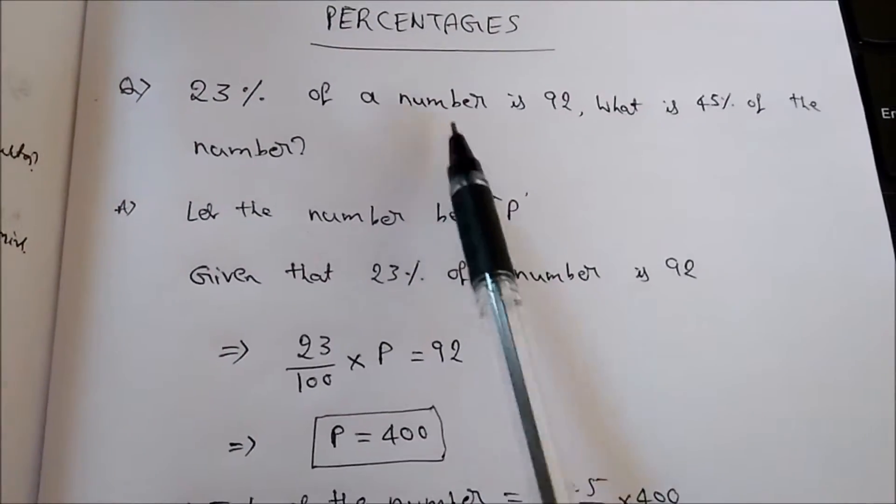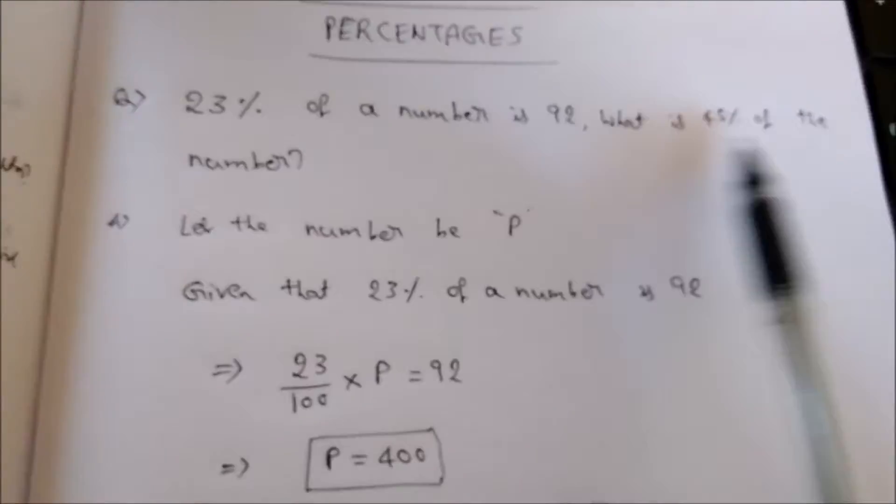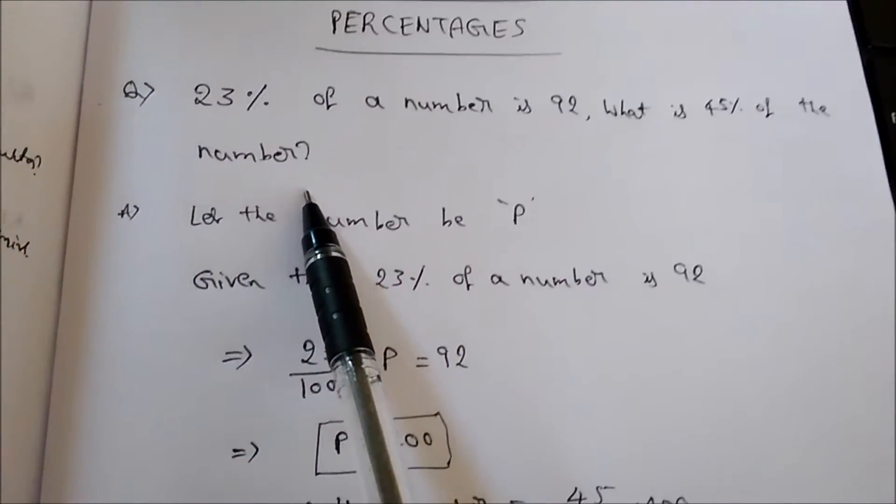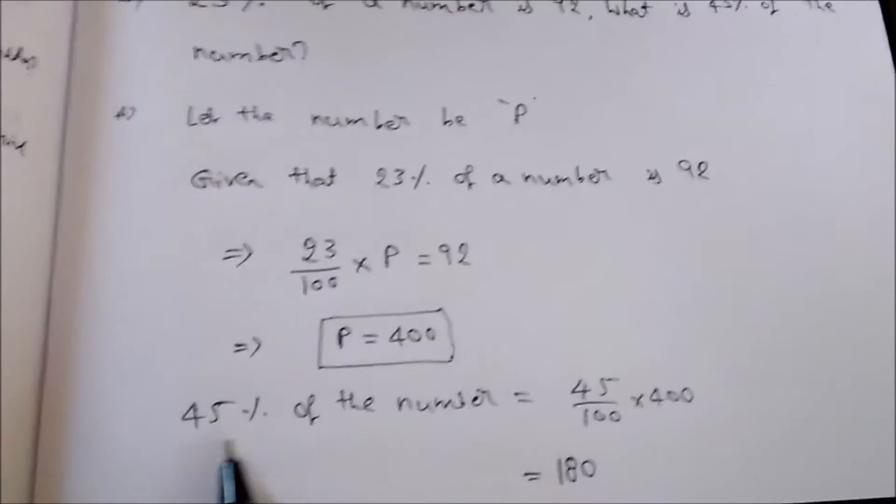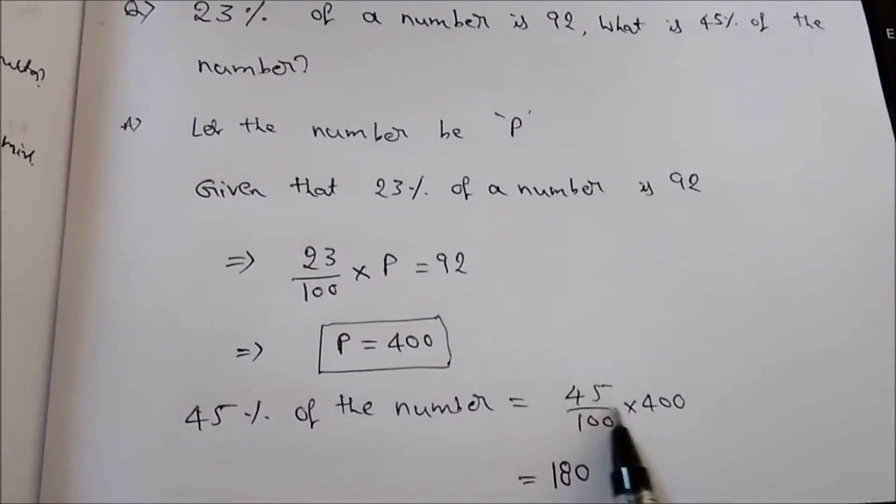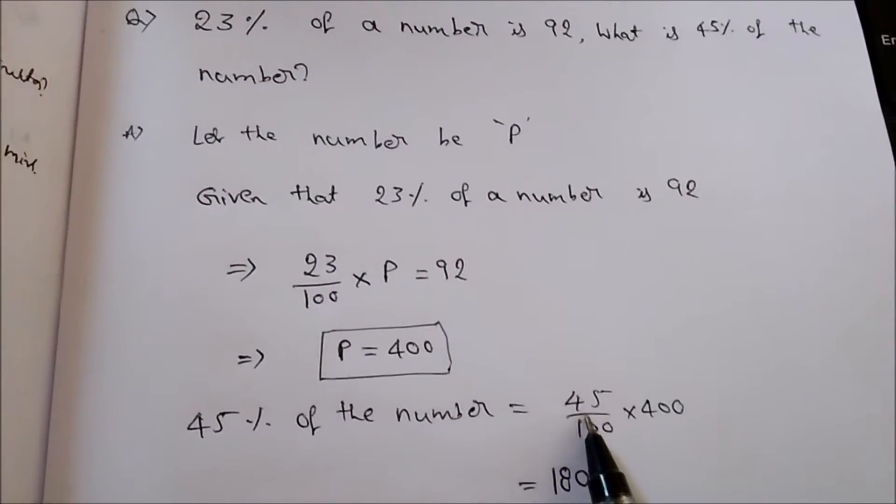Okay, now we got what is the number, but the question is what is the 45% of the number, so we need to find the 45% of the number. So 45% of the number is equal to 45% means 45 by 100.